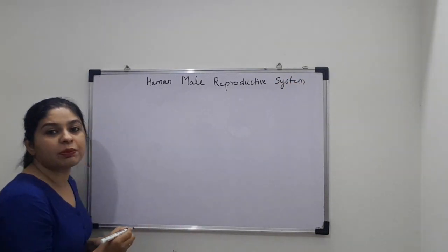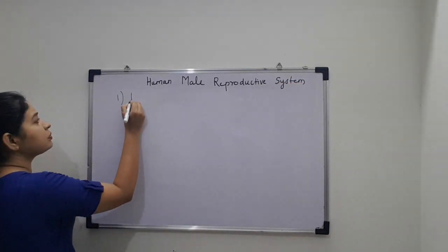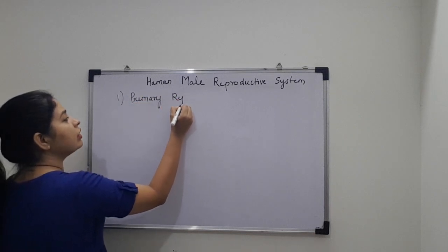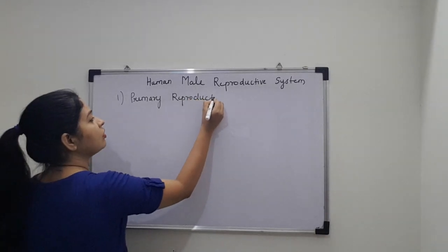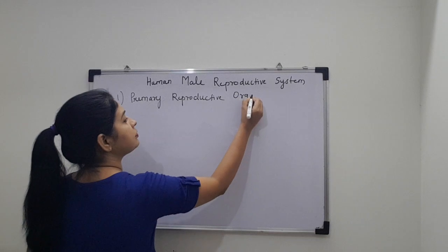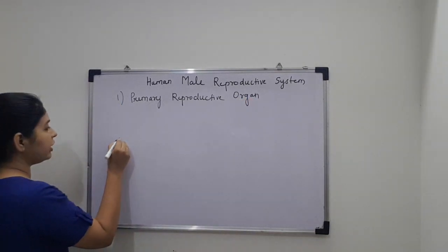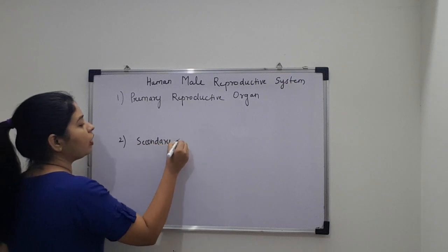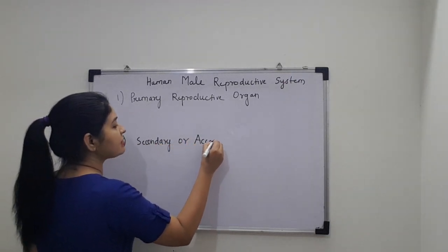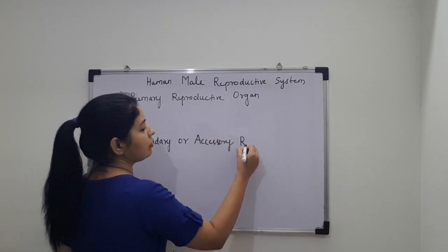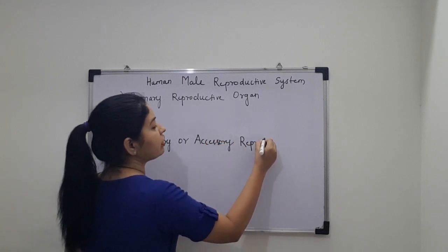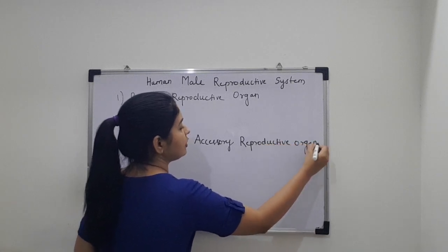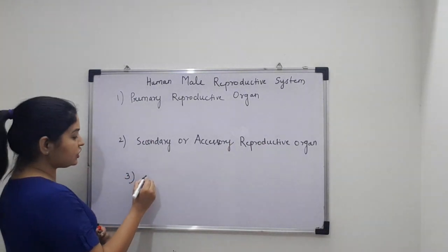Students, we are going to discuss this topic under three headings. First, primary reproductive organ. Second, secondary or accessory reproductive organ. And third, external genitalia.